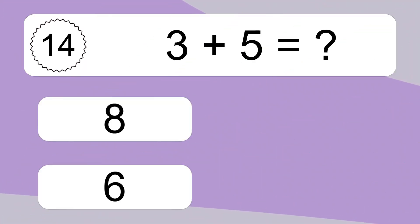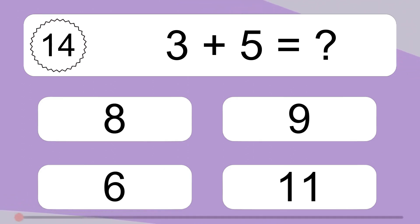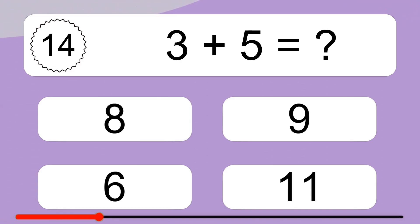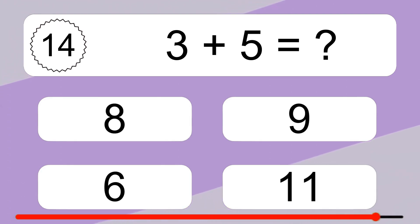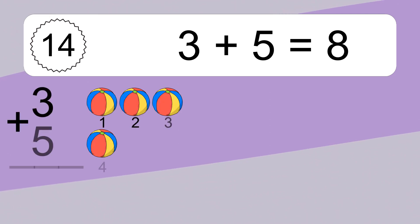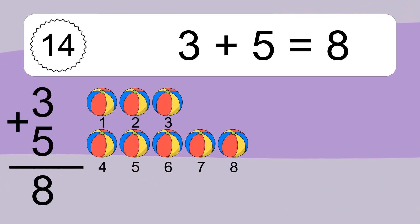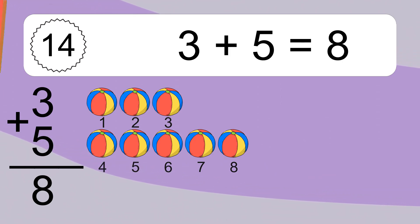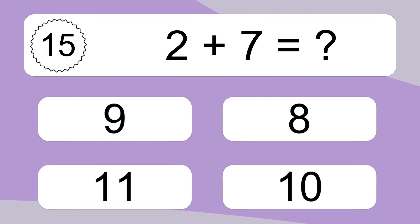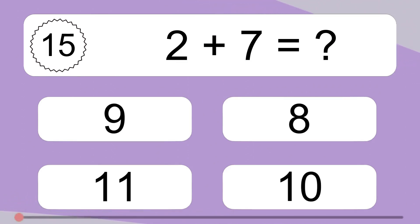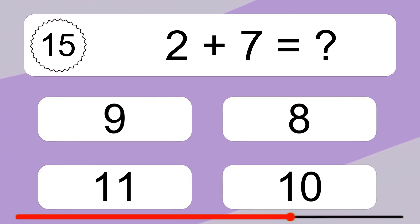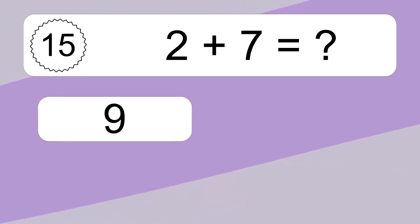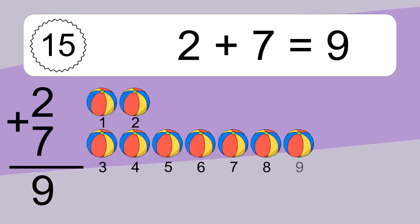3 plus 5 equals what? 3 plus 5 equals 8. Let's count it: 1, 2, 3, 4, 5, 6, 7, 8.